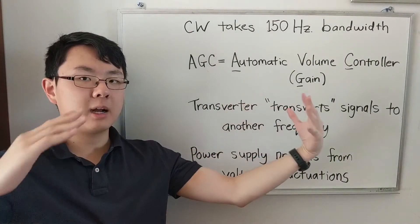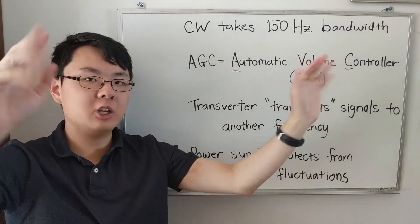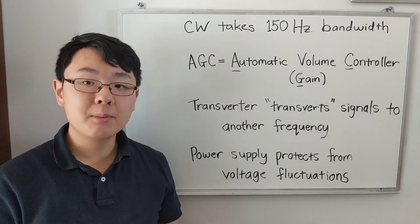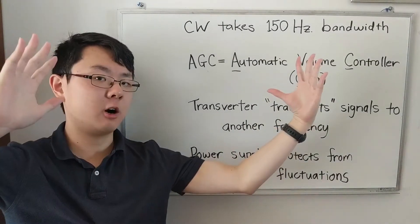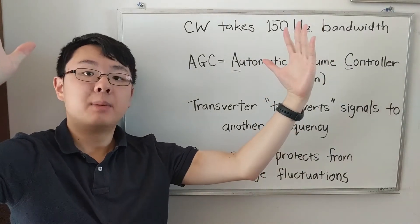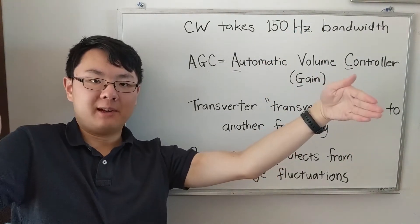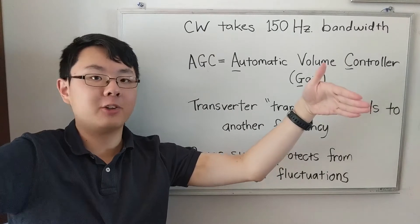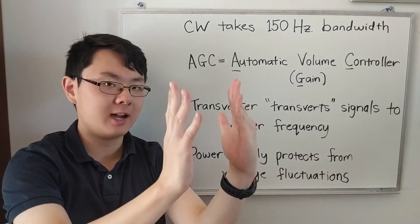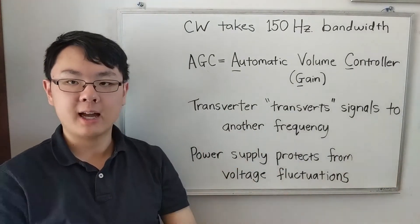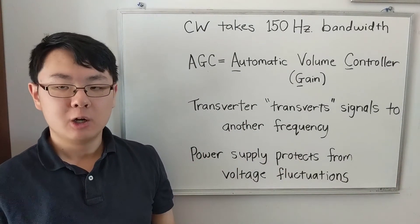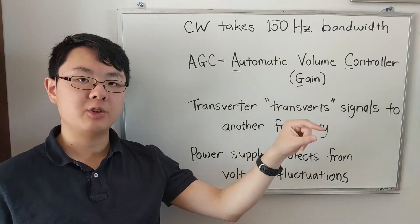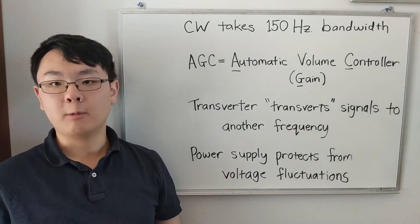There's an advantage to having multiple received bandwidth choices on a multimodal radio. The advantage is it reduces noise and interference by selecting a bandwidth matching the mode. If you're listening to CW, use a narrow bandwidth to block everything else. For voice mode, widen it a little to hear the full voice signal. If you only had a 2400 Hz bandwidth, that's great for SSB, but for CW you'd hear all nearby CW signals mixed together. That's why good HF radios have a knob to narrow the bandwidth to almost whatever you want.